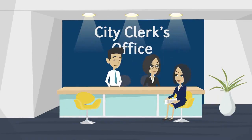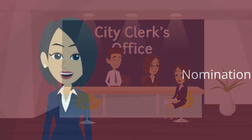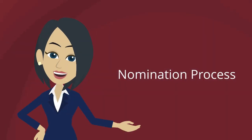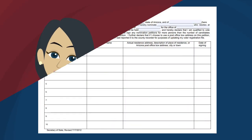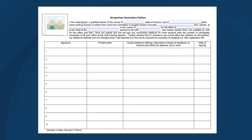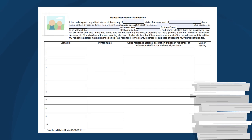Mary files her candidate statement of interest and is ready to begin the nomination process. Before collecting signatures, she inserts her information into the heading of the petition form, adds her photo, and makes copies of the petition sheet to circulate for signatures.